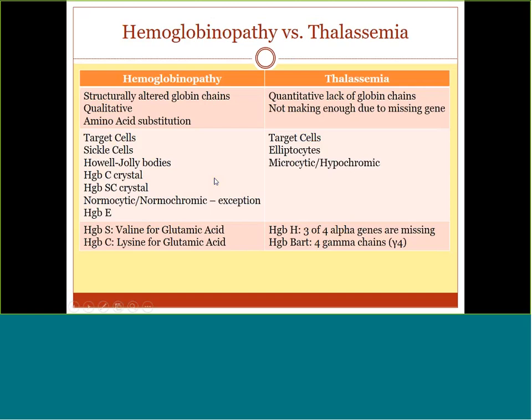Week one was all about learning hemoglobinopathies and thalassemia — two PowerPoints, one on each. Here's a chart of the key characteristics. A hemoglobinopathy means a disease of the hemoglobin molecule — there's a structural alteration to the globin chains. Globin chains are amino acids sequenced together to make hemoglobins like hemoglobin A, hemoglobin A2, and hemoglobin F, which are found in all adults.